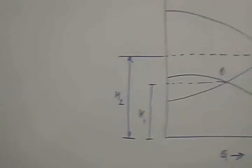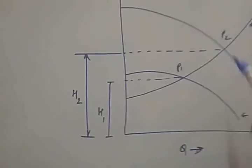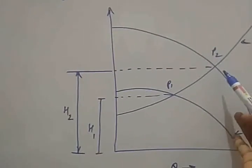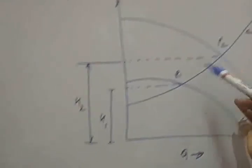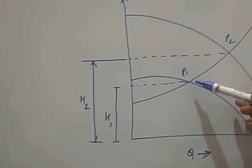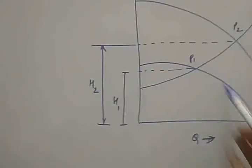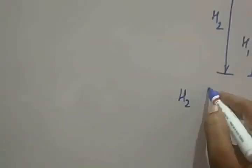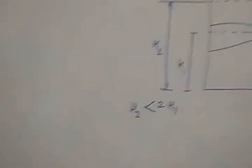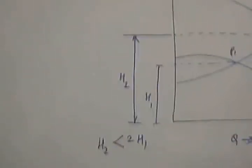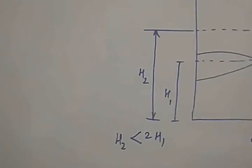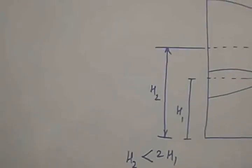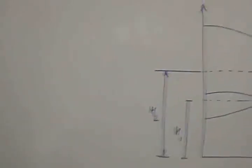The point of intersection of the combined total head-discharge characteristics and the system head curve shows that P2 is larger than P1. H1 is with respect to P1 and H2 is with respect to P2. We can see that H2 is less than 2H1 — so though two pumps are used, the head will not be double. A particular combination of pumps needs to be selected accordingly.